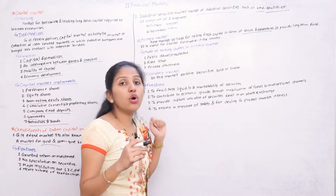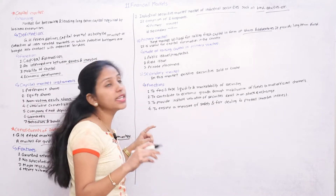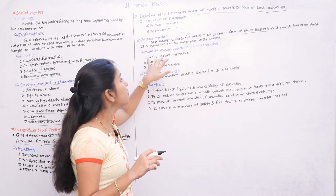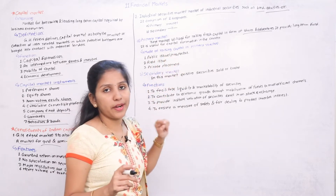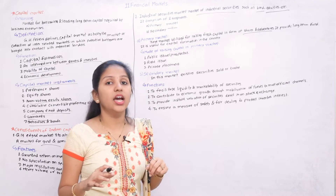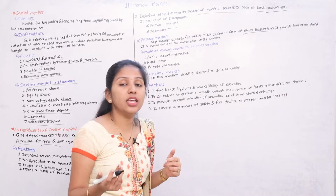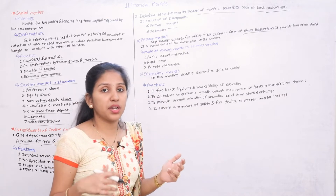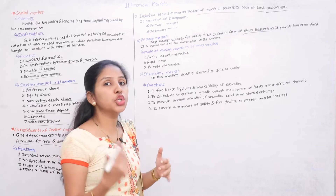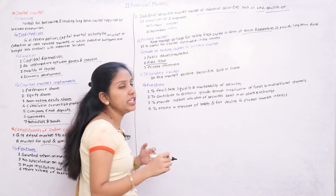The modes for raising capital in the primary market: first is the public issue — companies raise capital by issuing a prospectus. When people take money from the capital market through the public issue, the company issues a prospectus to raise the capital.